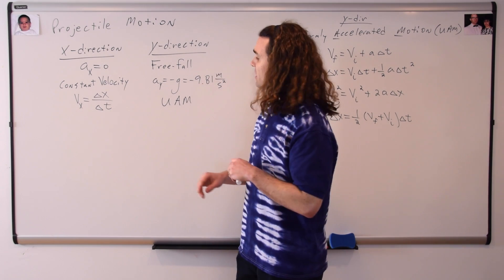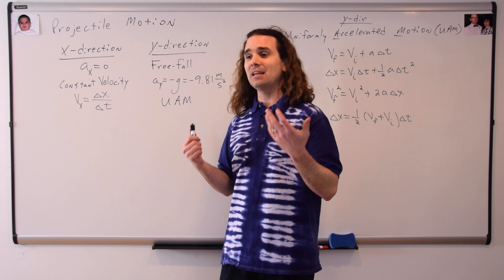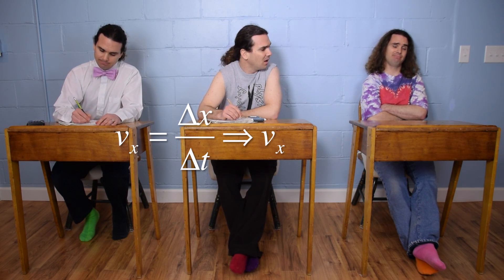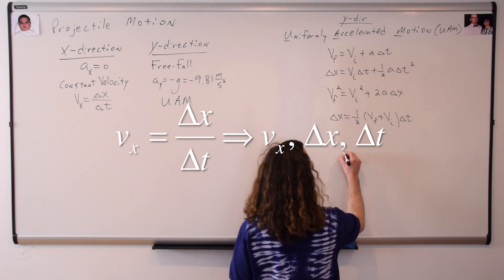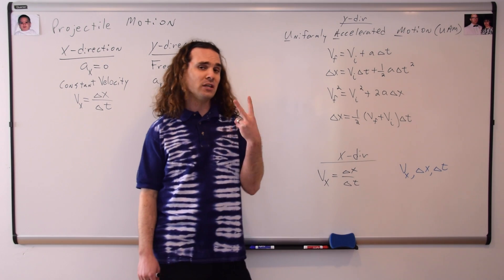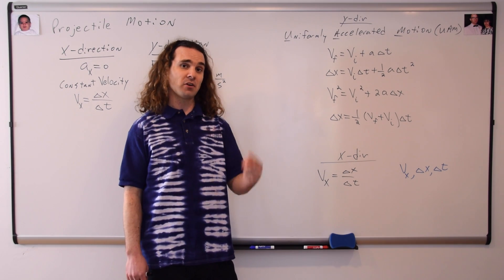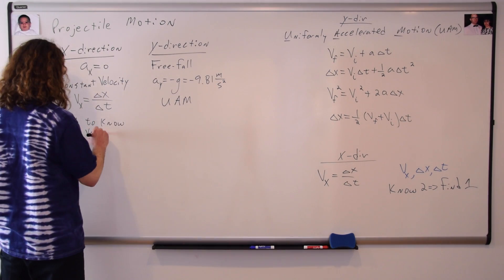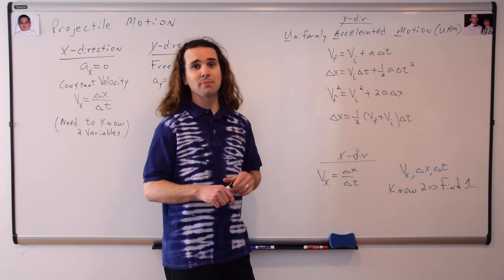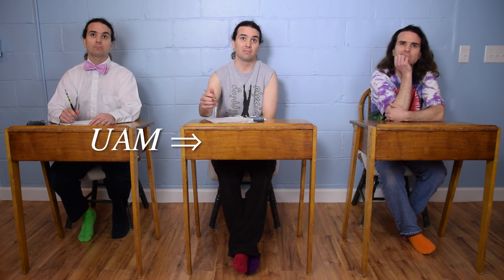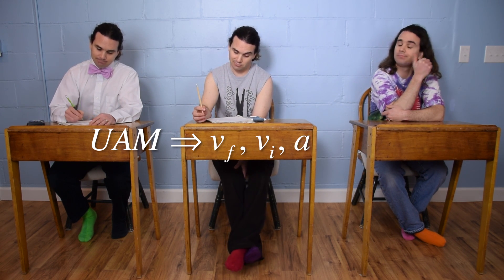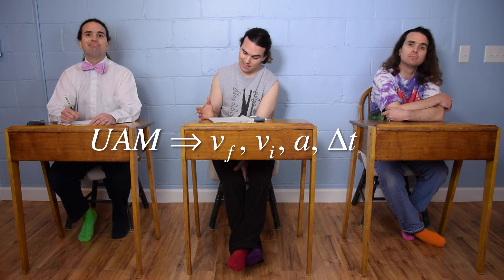Bo, please tell me what are the possible variables in the x direction? Well, there's only one equation, so: velocity in the x direction, change in position, and change in time. Notice, because there's one equation and three variables, you need to know two of the variables in order to figure out the other one. Now let's look at the y direction. Bobby, please list all the possible UAM variables: velocity final, velocity initial, acceleration, change in time, and displacement.